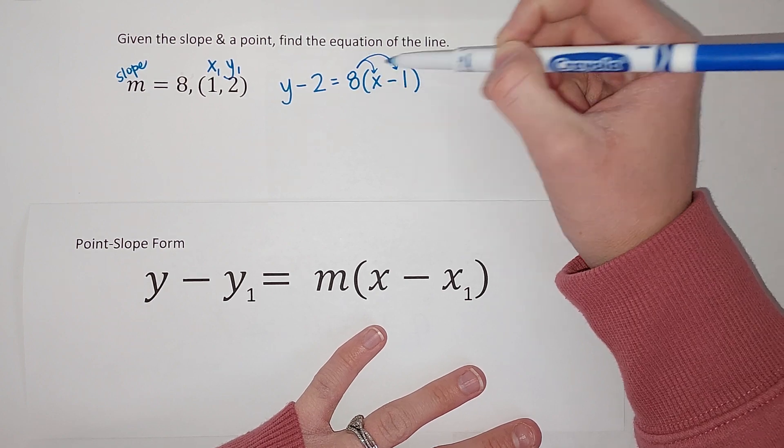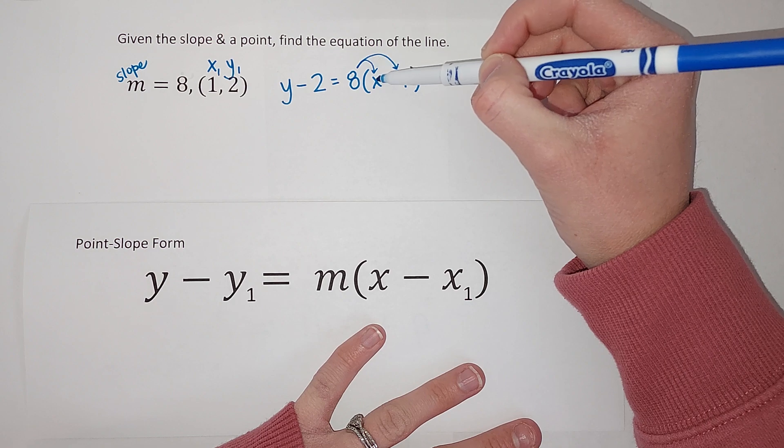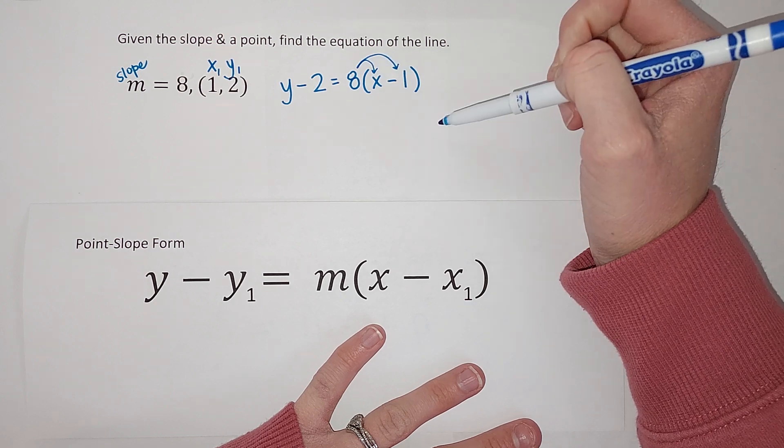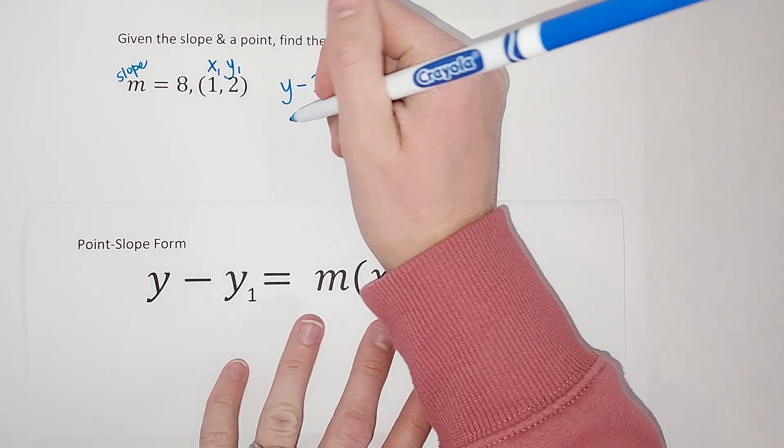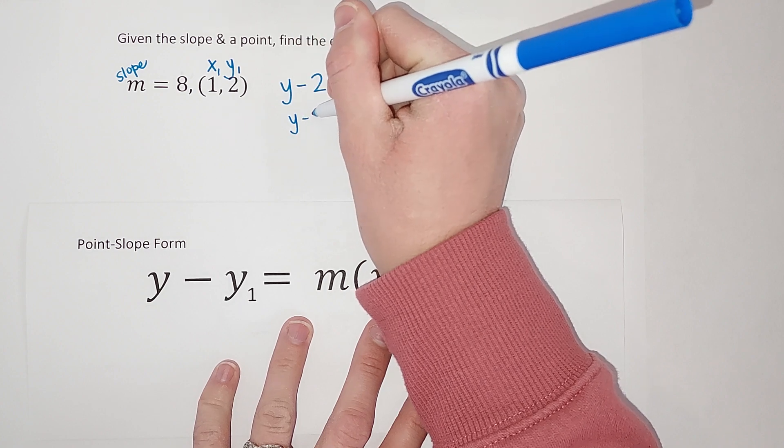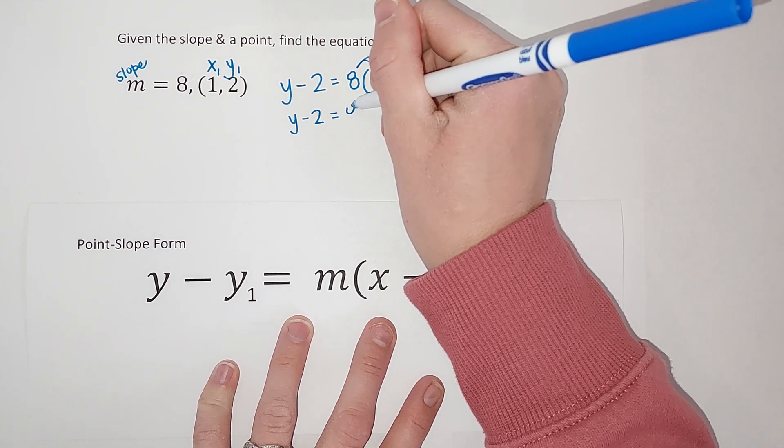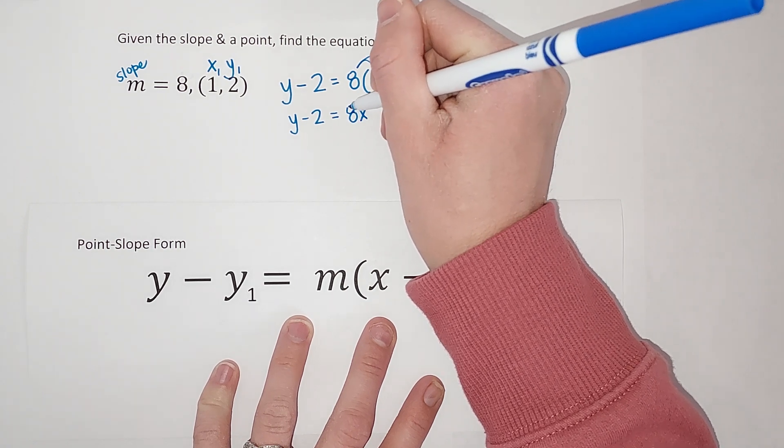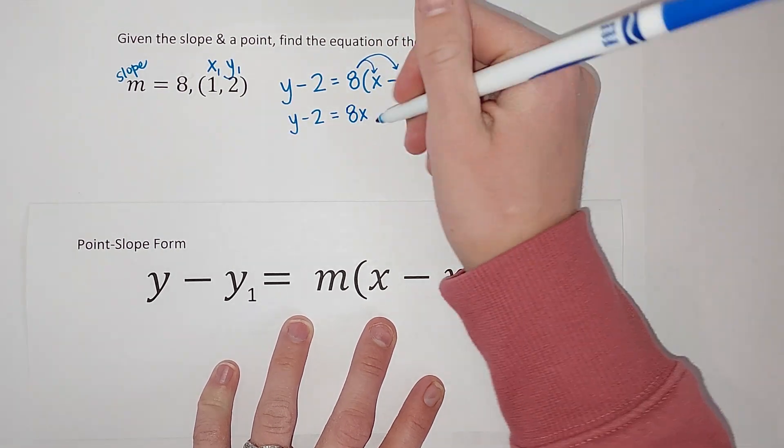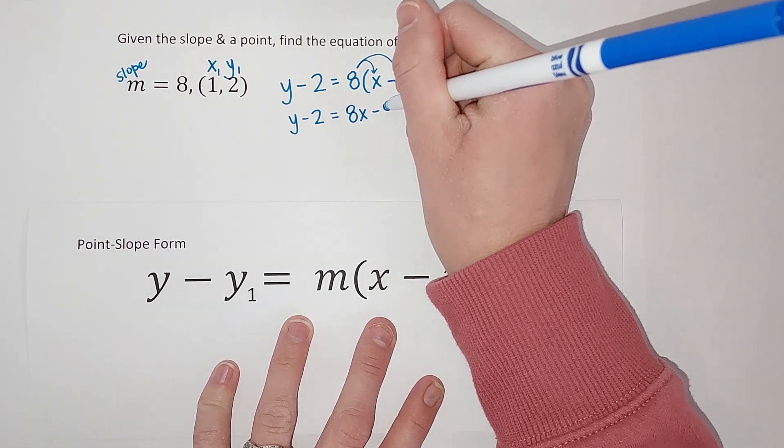It just means 8 is being multiplied by this, and I can multiply it by the X and then the negative 1. So if I do that, I still have Y minus 2 over here. Then 8 times X gives me 8X. 8 times a negative 1 gives me negative 8.